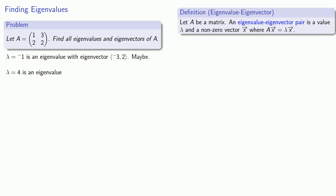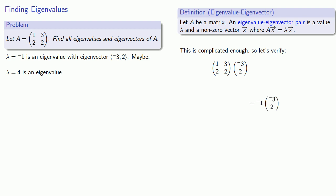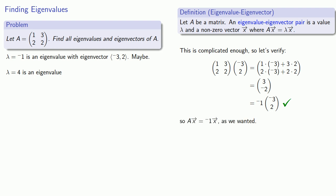This process is complicated enough with plenty of places to make mistakes, so let's verify that this works. If we did everything correctly, applying the linear transformation A to the vector (−3, 2) should give us a scalar multiple of our original vector — in fact, negative 1 times our original vector, because that's the eigenvalue. Multiplying our matrix by the column vector (−3, 2), we get (3, −2), which is in fact negative 1 times our original vector. So A applied to our eigenvector gives us negative 1 times our eigenvector, as expected.